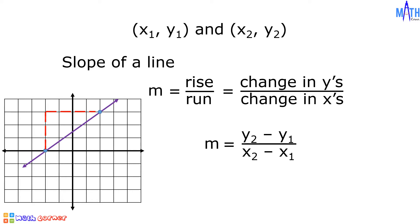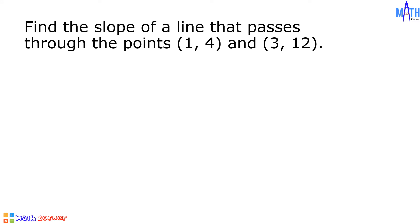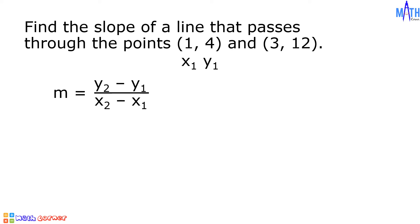Let us have some examples. Example number 1: find the slope of a line that passes through the points (1, 4) and (3, 12). In the given points, let us consider 1 as x1 and 4 as y1, 3 as x2, and 12 as y2.